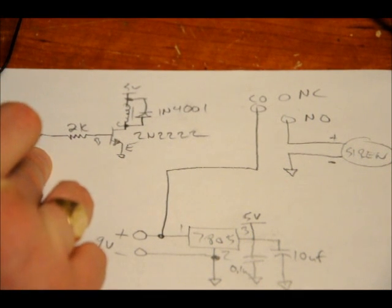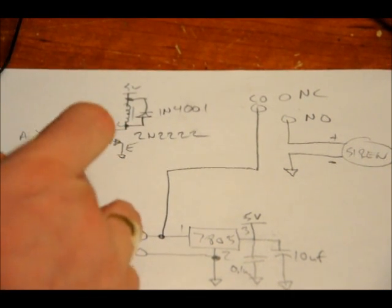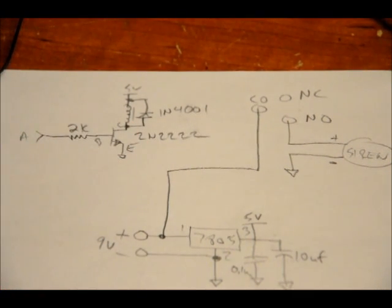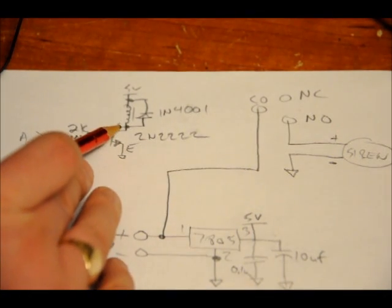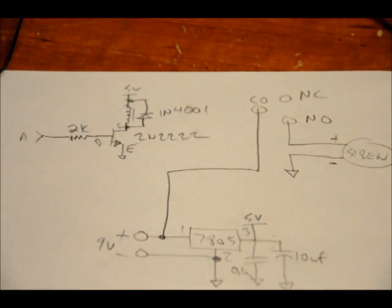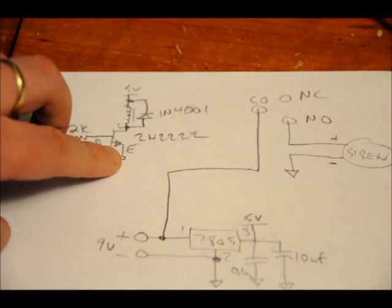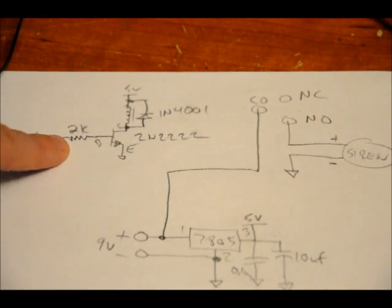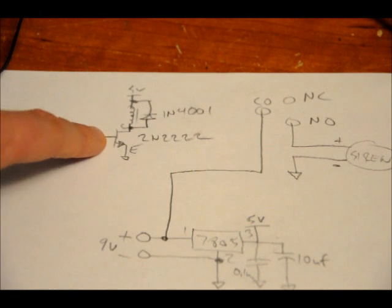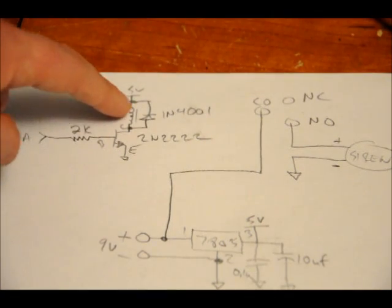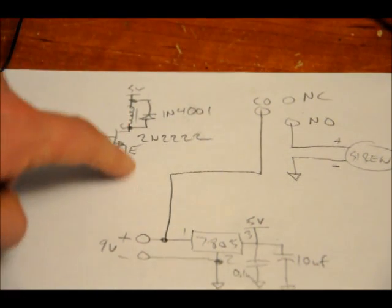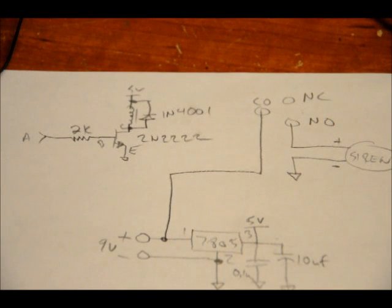The collector of the transistor is connected to one of the two coil pins of the relay. The emitter is connected to ground. When a positive pulse is applied through this 2K ohm resistor to the base, power goes from the collector through the base, down through the emitter, completing the circuit.